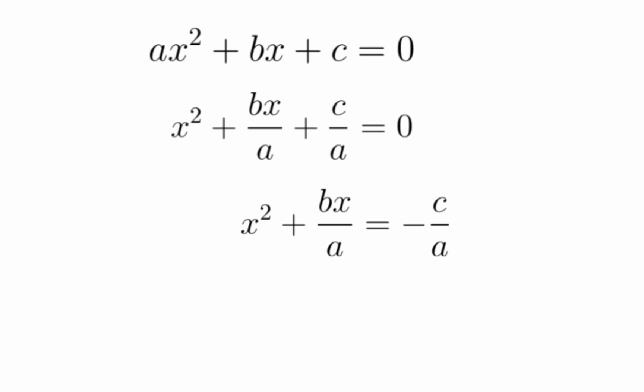And now, we want the whole left side to be a perfect square. Now, what we want is, it could be the square of two terms added together. So, that's what we're going to do here. And the formula for x plus y whole squared, if x and y are just some numbers, is x squared plus 2xy plus y squared.